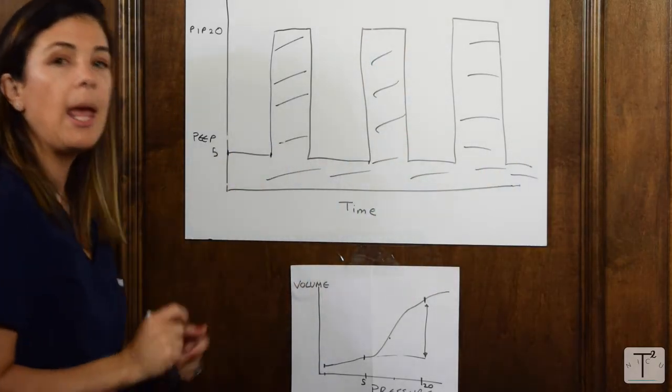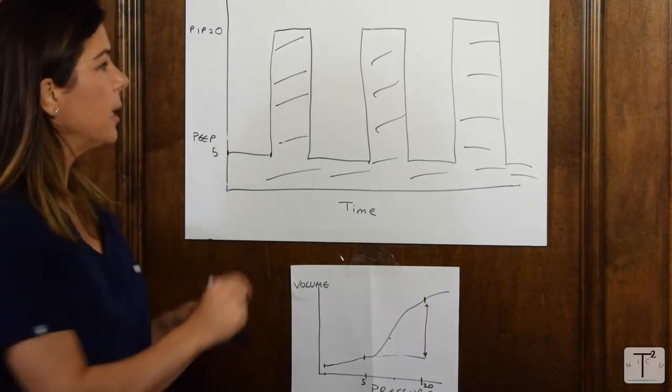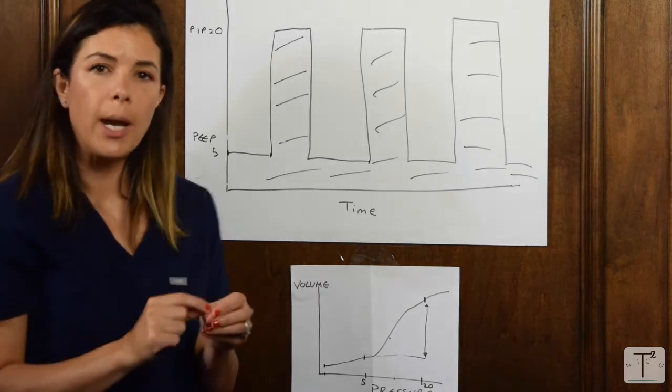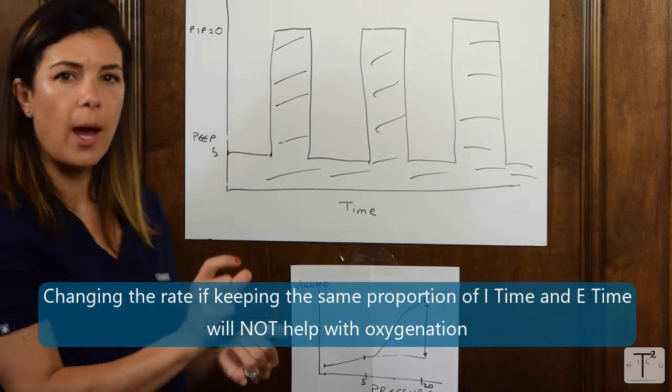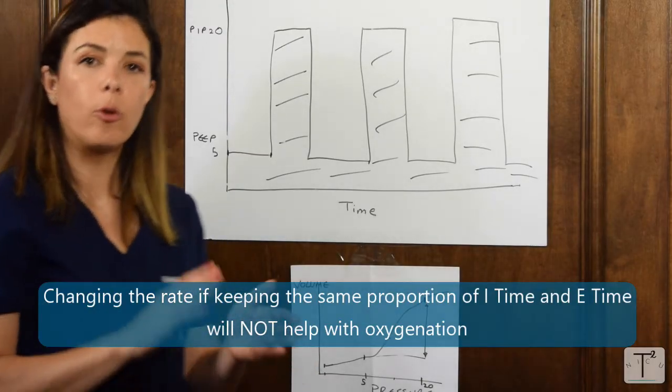You would still have exactly the same area under the curve. Realize that changing the rate, if you're keeping the same proportion of I time and E time, is not going to affect your oxygenation. So that's oxygenation. FiO2, PEEP, PIP, I time.